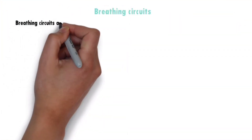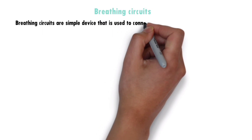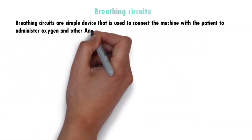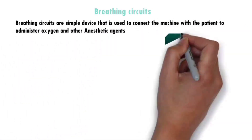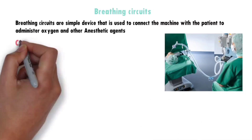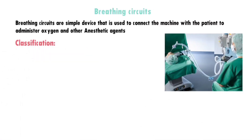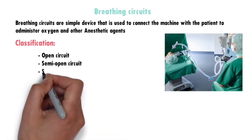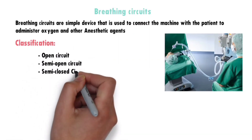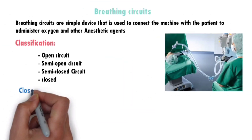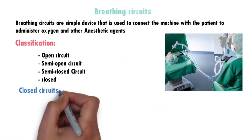Breathing circuits are simple devices used to connect the machine with the patient to administer oxygen and other anesthetic agents. They are mainly classified into open circuit, semi-open circuit, semi-closed circuit, and closed. We've already discussed the open and semi-closed circuits in the previous video. Today we will see about closed circuits.